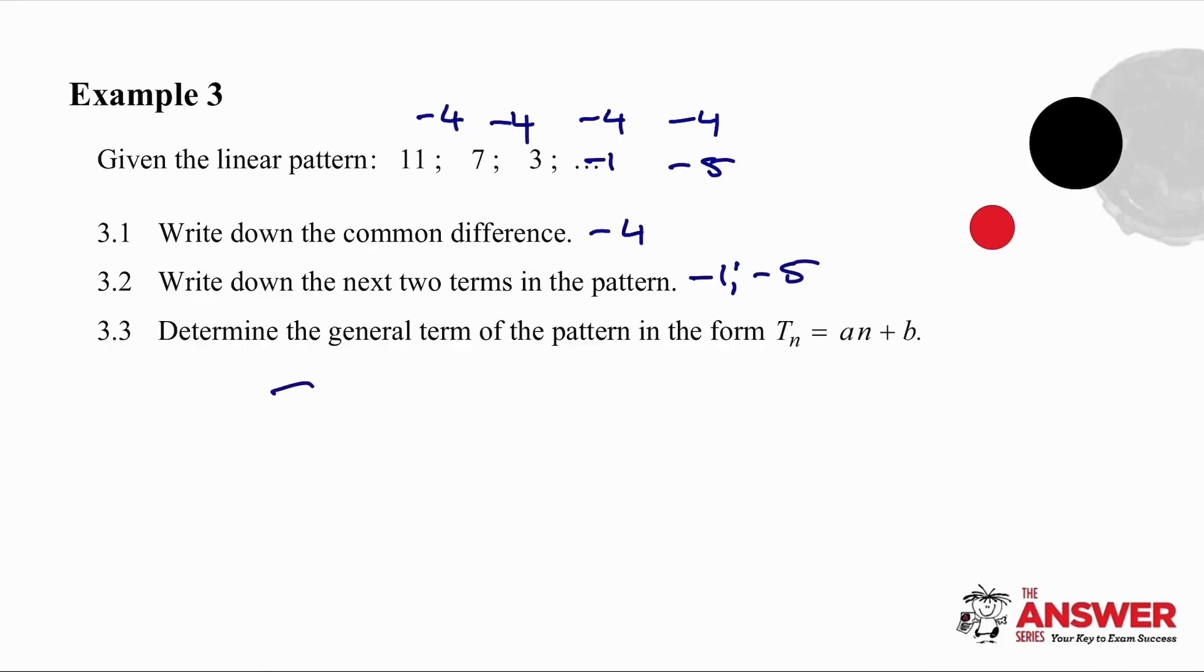Then to form the general term, we're going to use the exact same process, coefficient in front of n, it's the common difference. Now we know that the first term value is 11. So 11 is equal to minus 4 plus b, and therefore b is equal to 15. So Tn is equal to minus 4n plus 15.